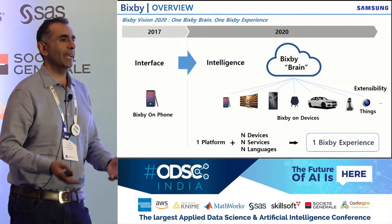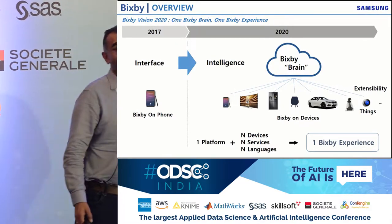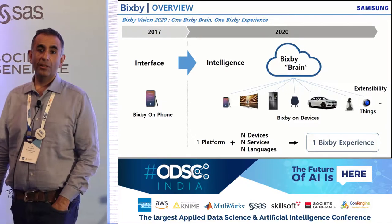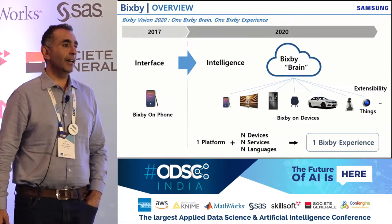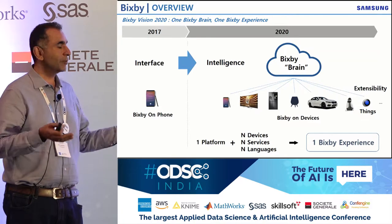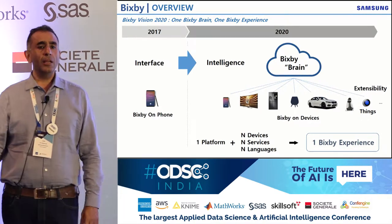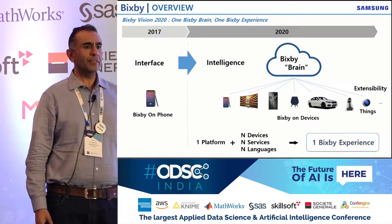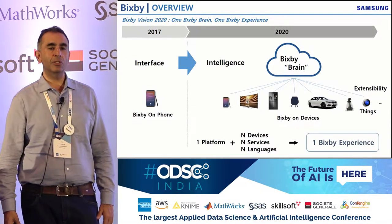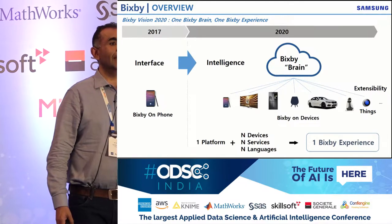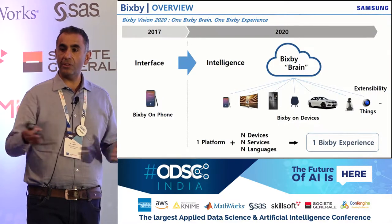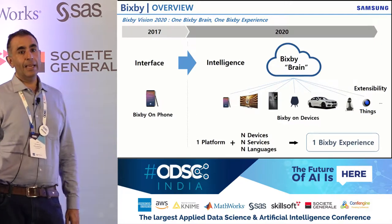Smartphones are powered by apps, but very soon we are moving to a world where there will be no apps at all. Siri, Cortana — all these assistants have been introduced. Bixby was launched in 2017, and that year smart speakers took off, with around 47 million smart speakers launched. Last year, more than 100 million smart speakers were sold.